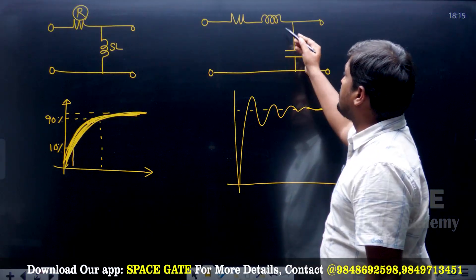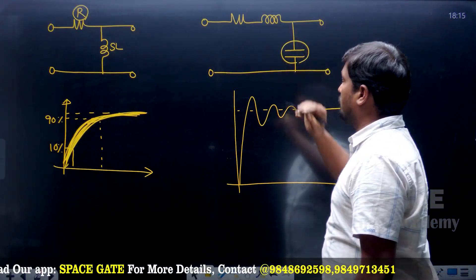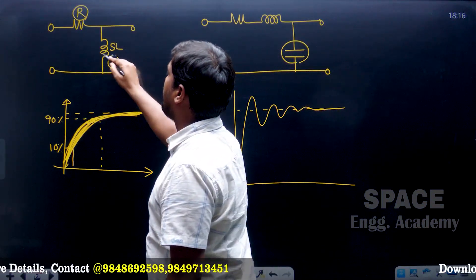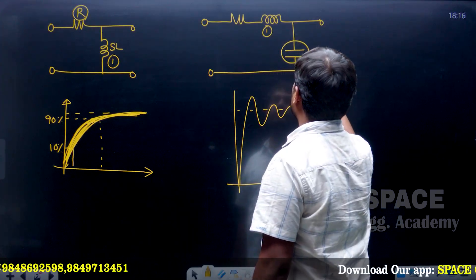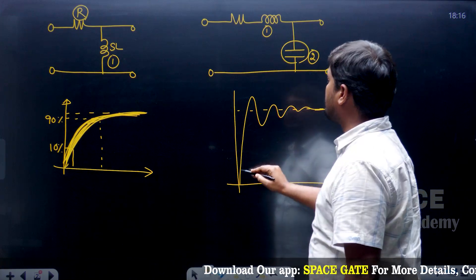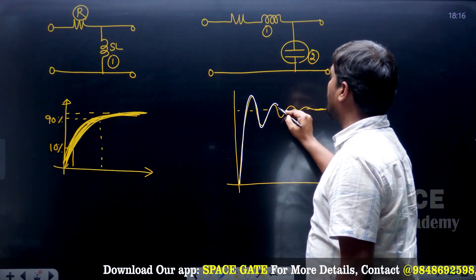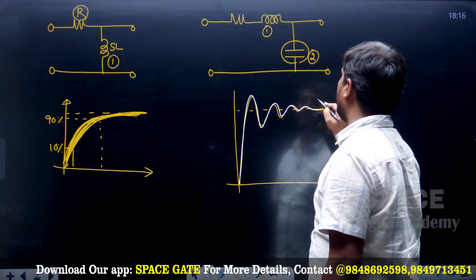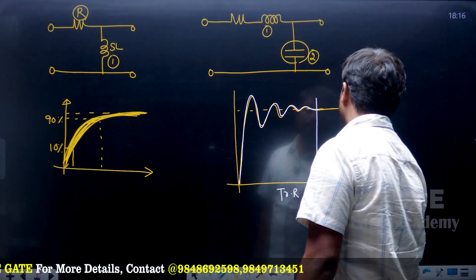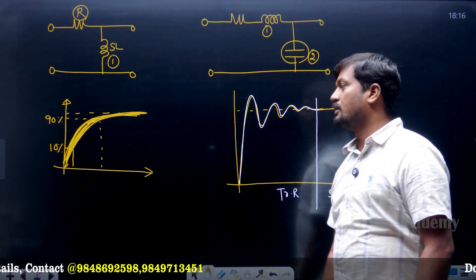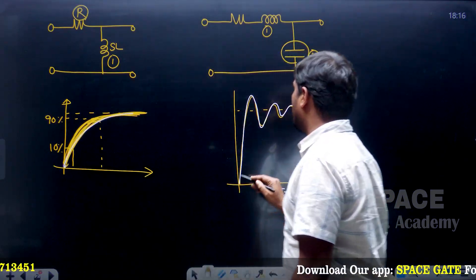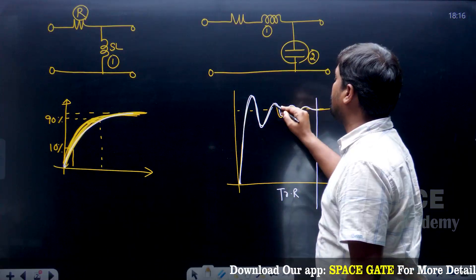Whenever transient elements are increasing in the circuit — either inductor or capacitor — here there is only one transient element, and here there are two. When transient elements are increasing in the circuit, the number of oscillations also increases. Whenever oscillations are increasing, definitely the transient response also increases, which means the steady-state response is going to be decreased. Both are inversely proportional.